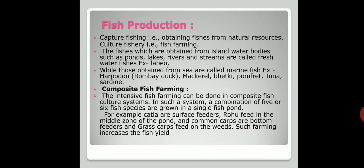The next topic is fish production. In fish production there are two types: capture fishing, which means obtaining fishes from natural resources, and culture fishery, which means fish farming. Fishes obtained from freshwater sources like ponds, lakes, rivers or streams are called freshwater fish — for example, Labio. Those obtained from the sea are called marine fish — for example, Bombay duck (Harpodon) and pomfret.